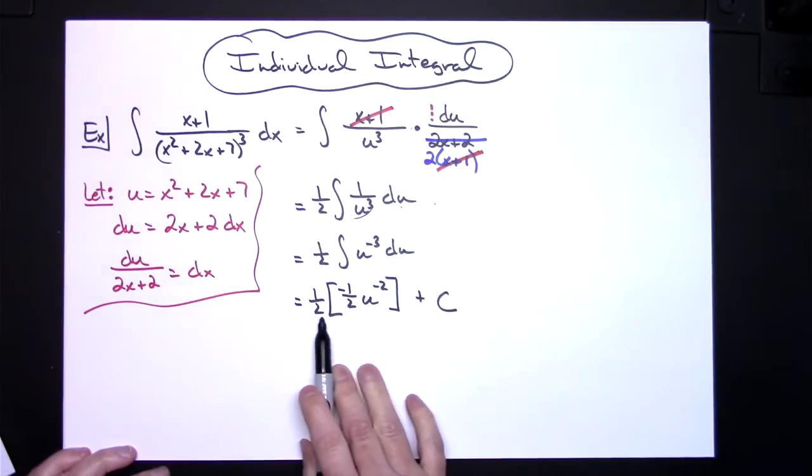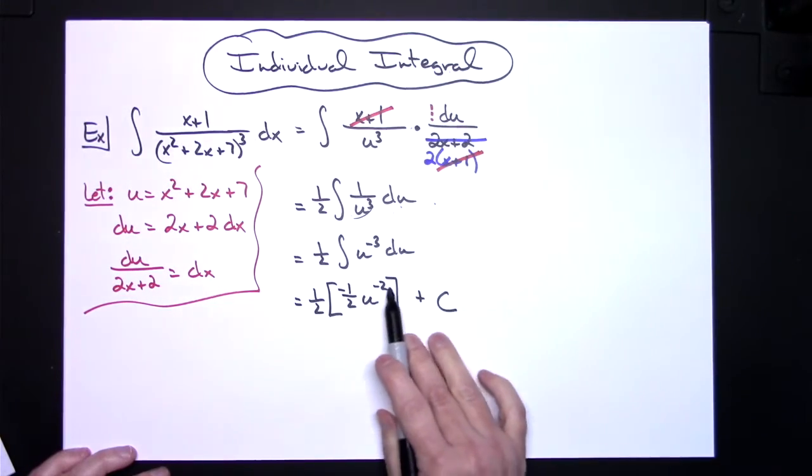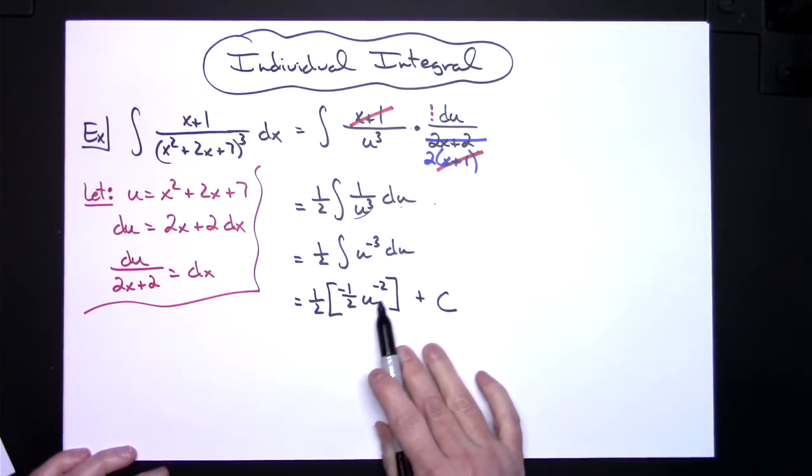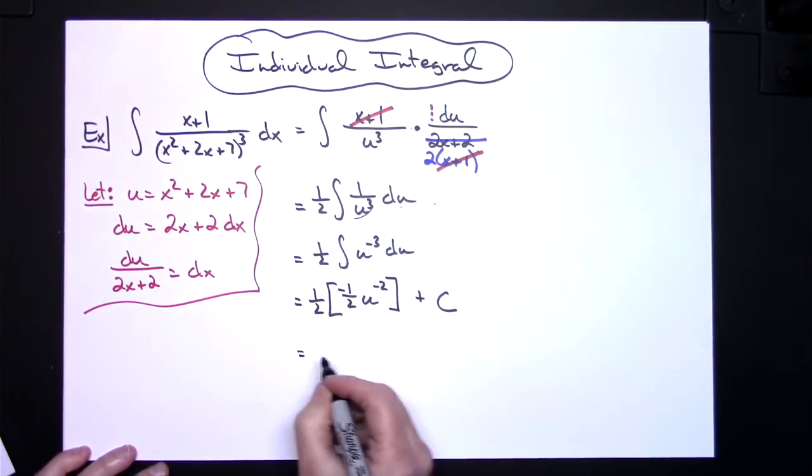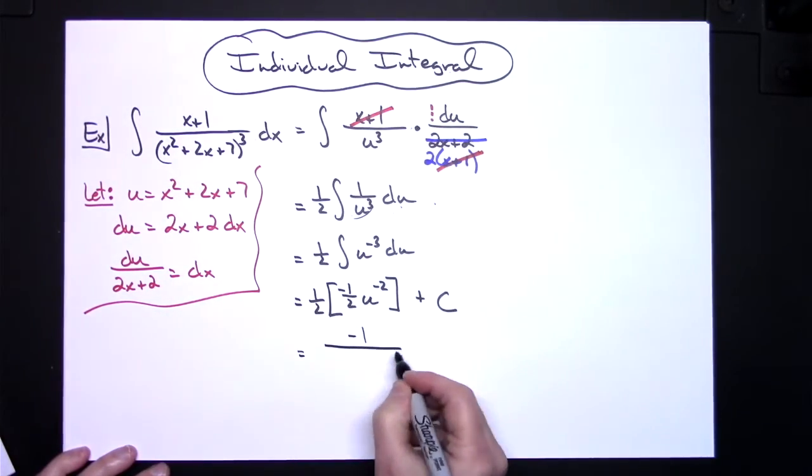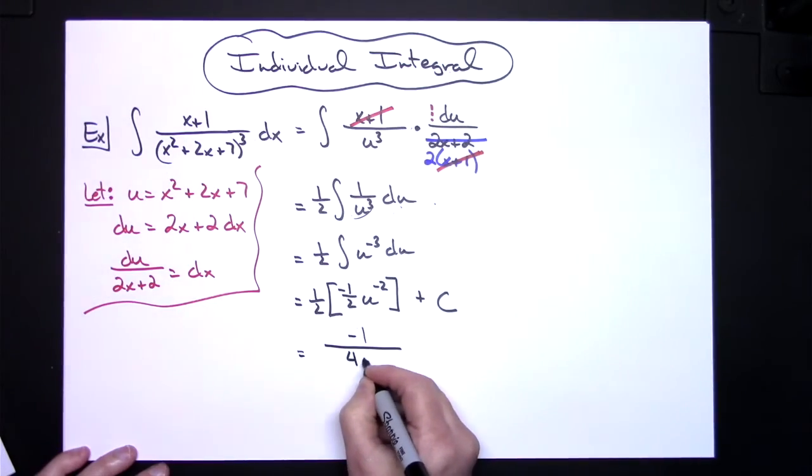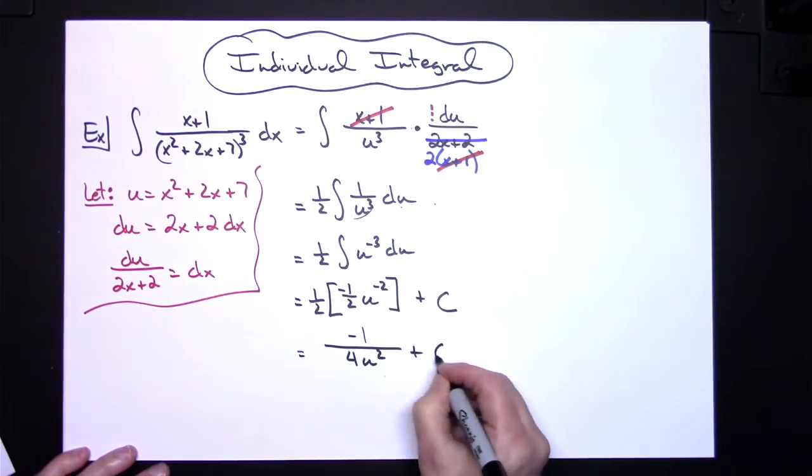Let's go ahead and multiply this out in front, so I'll have negative 1 fourth. At the same time let's move this down to the bottom and make that a u to the positive 2. So I'm going to have negative 1 over 4 u squared plus c.